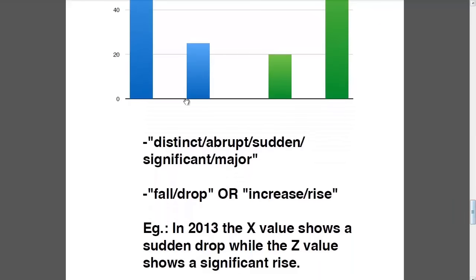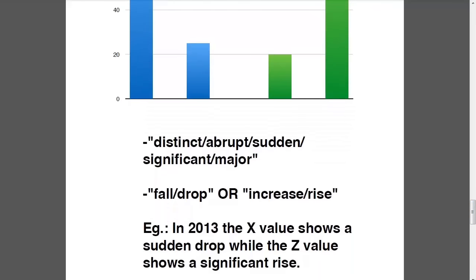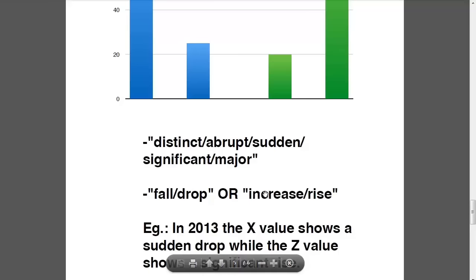You can use these adjectives to describe something like that: distinct, abrupt, sudden, significant, major. In the blue case, you can use 'fall' or 'drop'; in the green case, 'increase' or 'rise.' So we can have: distinct fall/drop, abrupt fall/drop, sudden fall/drop, significant fall/drop, major fall/drop — and accordingly distinct/abrupt/sudden increase or rise, etc. You can use them any way you like. Your vocabulary has more variety in this way when you describe.